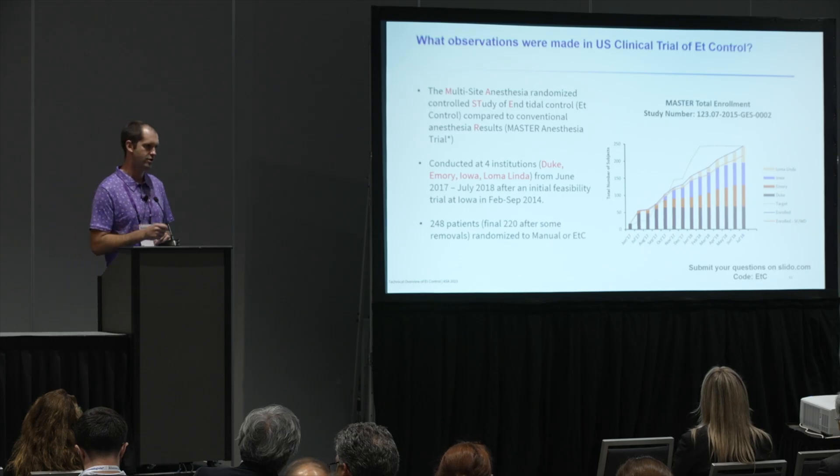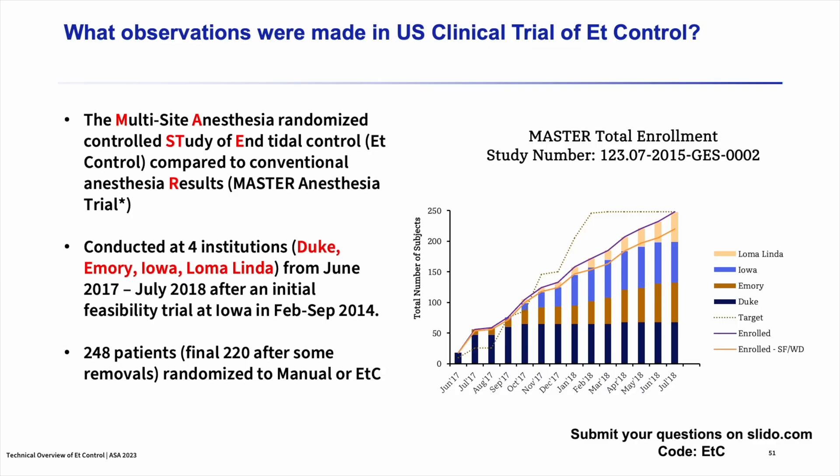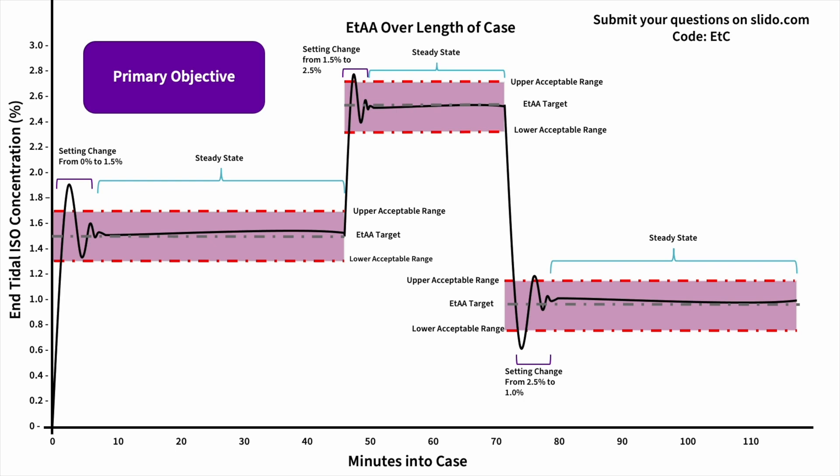How did we prove in the US this was going to work — mostly for the FDA? We ran a large master trial across four different sites, about 248 patients, in the 2017–2019 timeframe. The main objective was: what percent of the time is your measured end-tidal value really close to your target end-tidal value? What percent of the time are you within that purple box — measured really close to set — when you use end-tidal control versus when you don't?